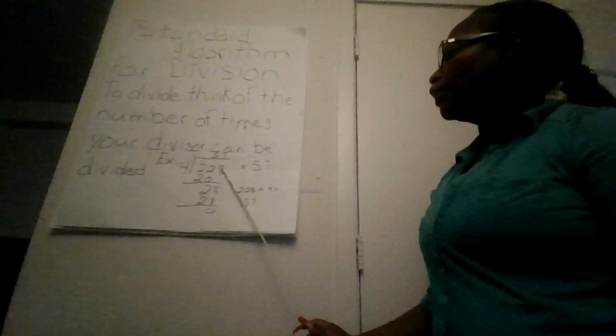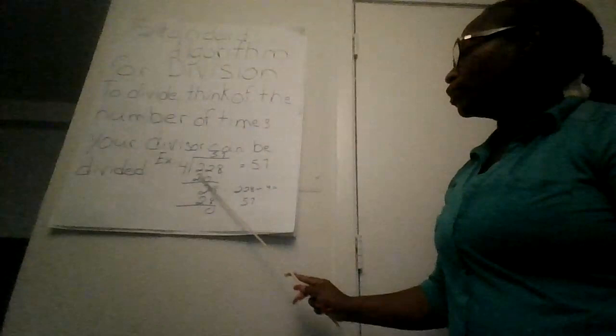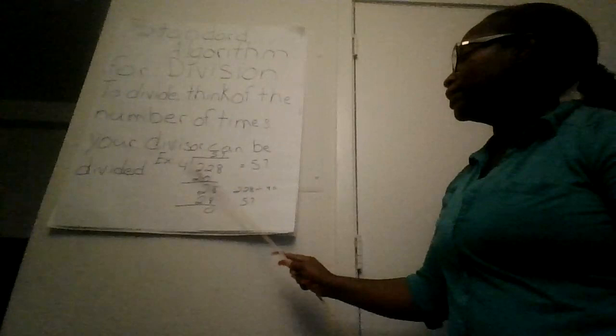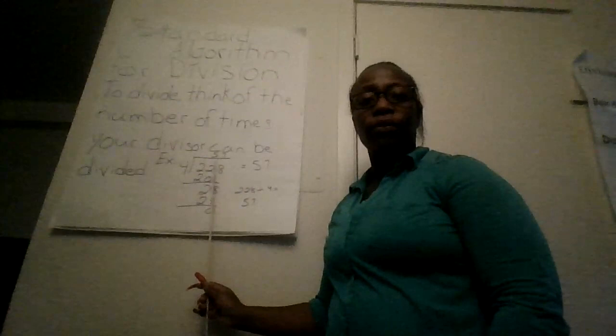You divide 228 by 4. Put 5 over the 2. 4 times 5 is 20. Subtract 20 from 22 to get 2. Bring down the 8. 4 times 7 is 28 with a remainder of 0. So the answer is 57. 228 divided by 4 equals 57. That's the easiest math I know.